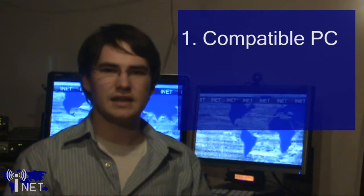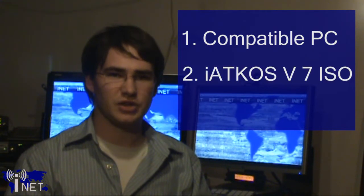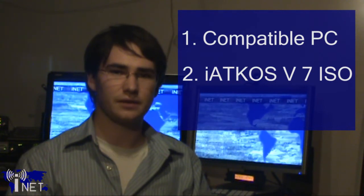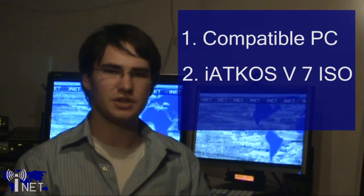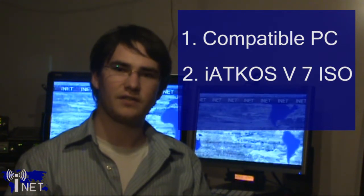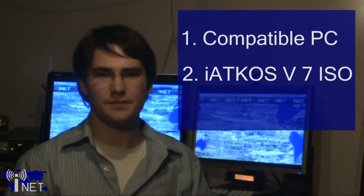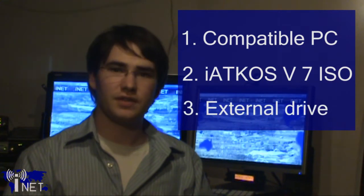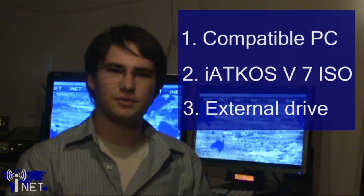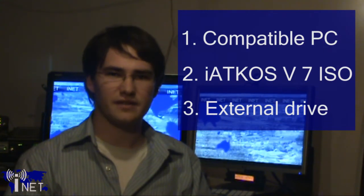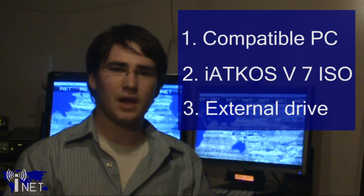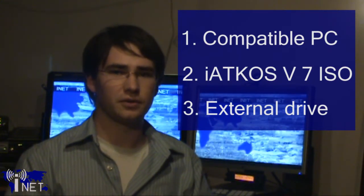The second thing you're going to need is an OSX install image. I'm going to be using the iATCOS version 7, which is a modified version of the Mac OSX 10.5.7 distribution. It's been modified with patches so you can boot it on a PC. The third thing you're going to need is an external DVD drive, as the HP TM2 does not have a built-in optical drive. There are ways to install Mac OSX from a bootable USB thumb drive, however I'm not going to cover that in this particular video.